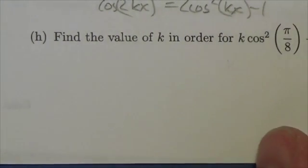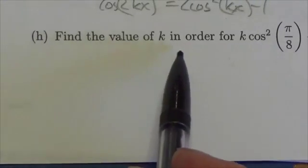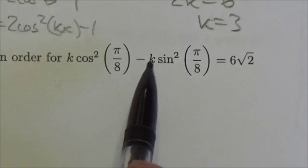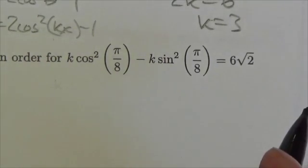Hi everybody, this is the Math 30-1 Trig 2 review, and this is question 8h. Find the value of k in order for k cos²(π/8) - k sin²(π/8) to equal 6√2.